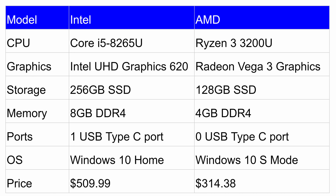In addition to the CPU, the GPU is also different. The Intel configuration has the Intel UHD Graphics 620 — the built-in graphics that comes with the Core i5 processor — whereas the AMD configuration uses the Radeon Vega 3 graphics. Now when it comes to storage, the more expensive version has 256GB of SSD storage and 8GB of DDR4 RAM.